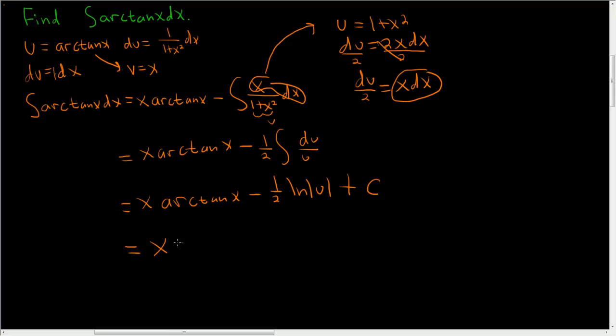So this is equal to x arctan x minus 1 half natural log. And u is 1 plus x squared. So that's always positive, so we can indeed drop the absolute value plus our arbitrary constant.